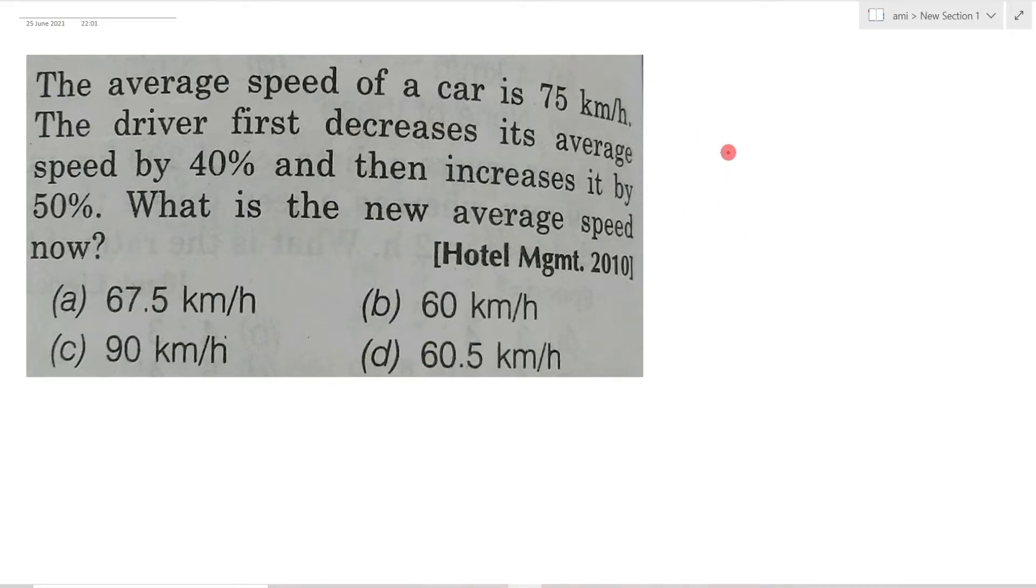The initial speed is 75 kilometers per hour. A 40% decrease in ratio terms can be written as 2/5. If the initial value was 5, you decrease by 2, so the ratio becomes 3/5.